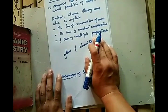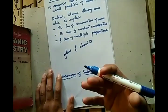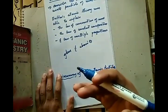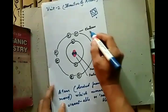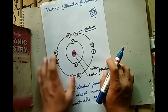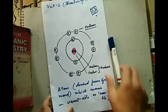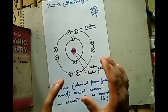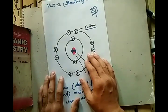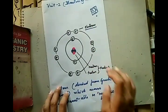In this unit we will discuss the observations made by scientists in the 19th and 20th century. These observations and experiments show that the atom consists of subatomic particles such as electrons, neutrons, and protons. A new discovery shows that the atom is further subdivided into electrons, neutrons, and protons.